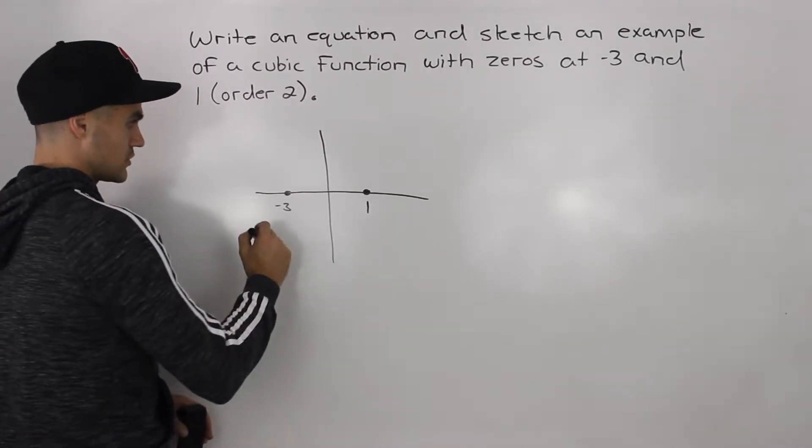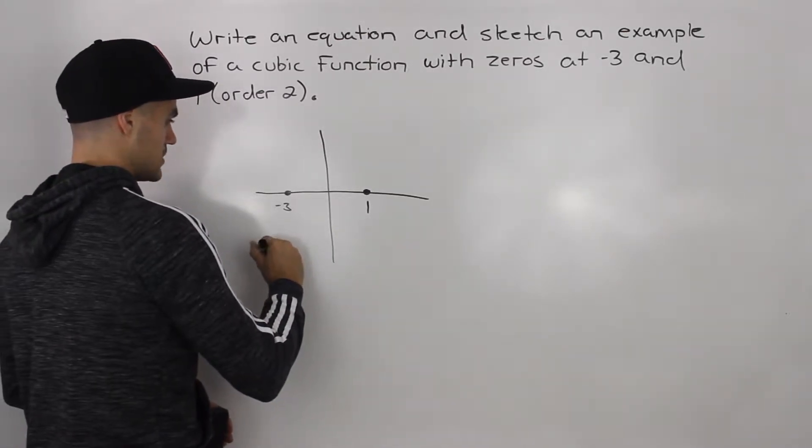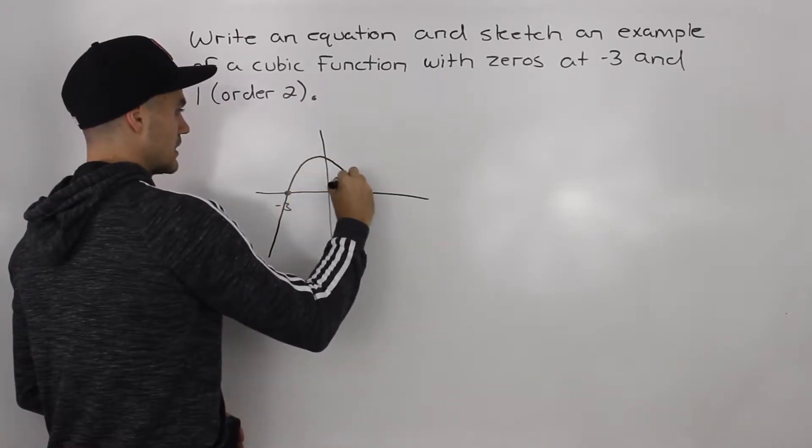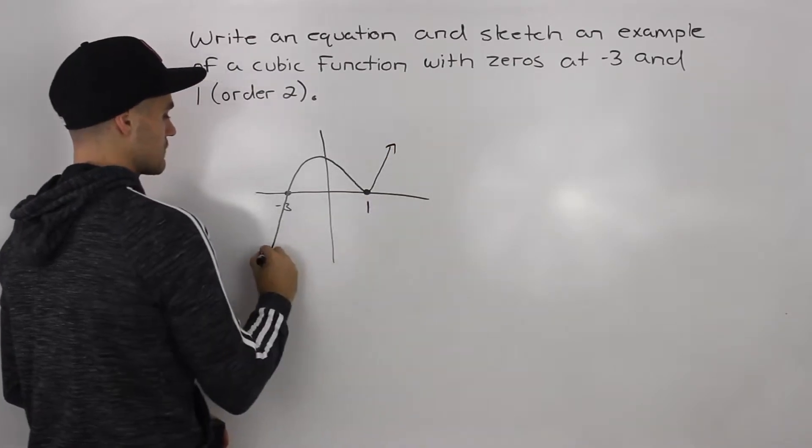So an example of a cubic function like that would be maybe a function that goes through negative 3 like this, gets to positive 1, and then bounces off.